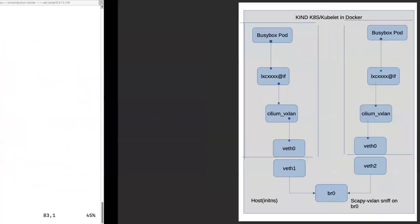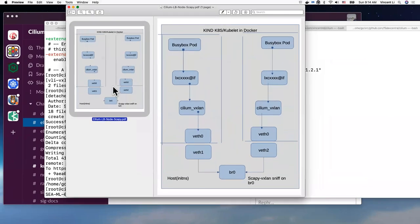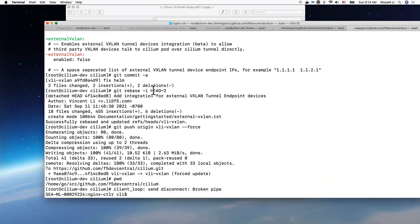Here is another diagram showing the same packet flow. The packet flows from the BusyBox container-side network interface, through the Docker container-side host network interface, through the Cilium VXLAN tunnel device, through the virtual network interface for the Kubernetes node, all the way down to the bridge interface. Let's do a demo.